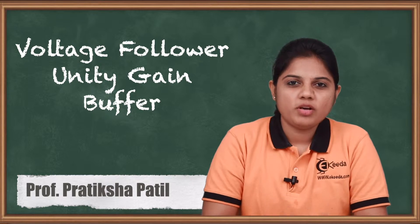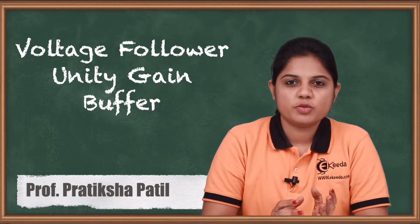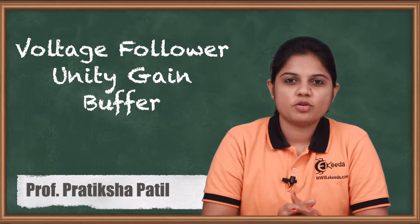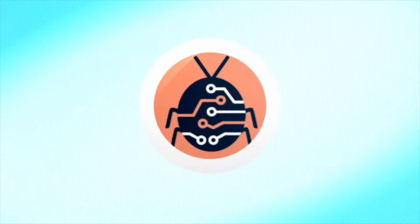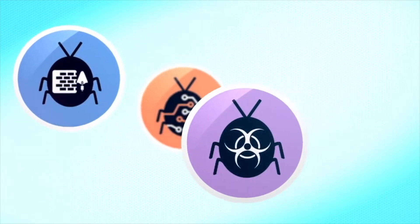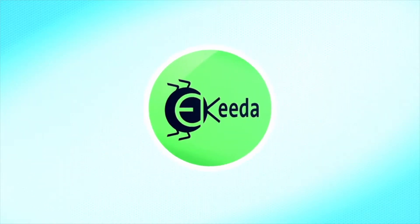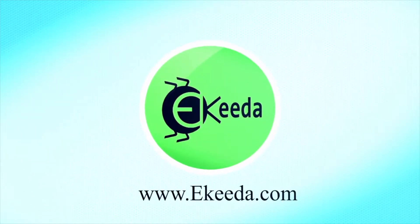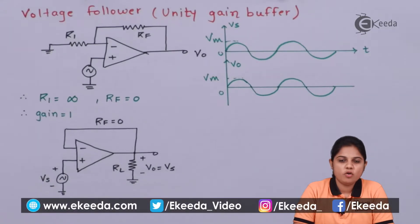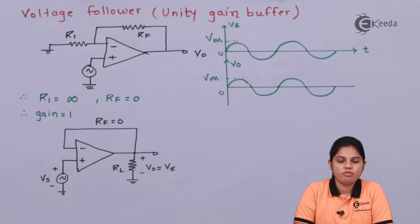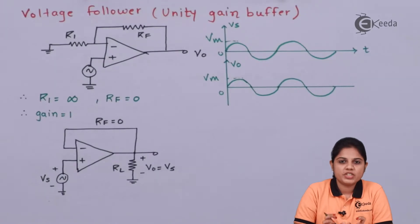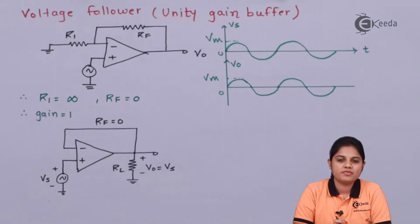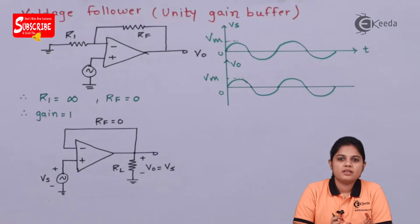To make the non-inverting amplifier a voltage buffer, we need to make specific changes, which we are going to see in today's video. Basically, the important parameters in any operational amplifier are its input resistance and feedback resistance, which decide the closed-loop voltage gain of that amplifier. If we change the resistance values to specific values, we can create a non-inverting amplifier as a voltage follower.